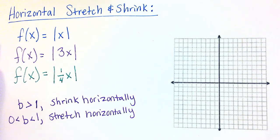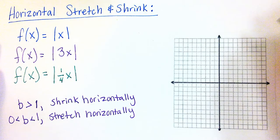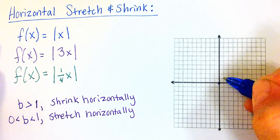In this video we are looking at horizontal stretch and shrink of parent functions. Our parent function today is f of x equals absolute value of x. I'm going to drop the parent function over here on the graph to the right.